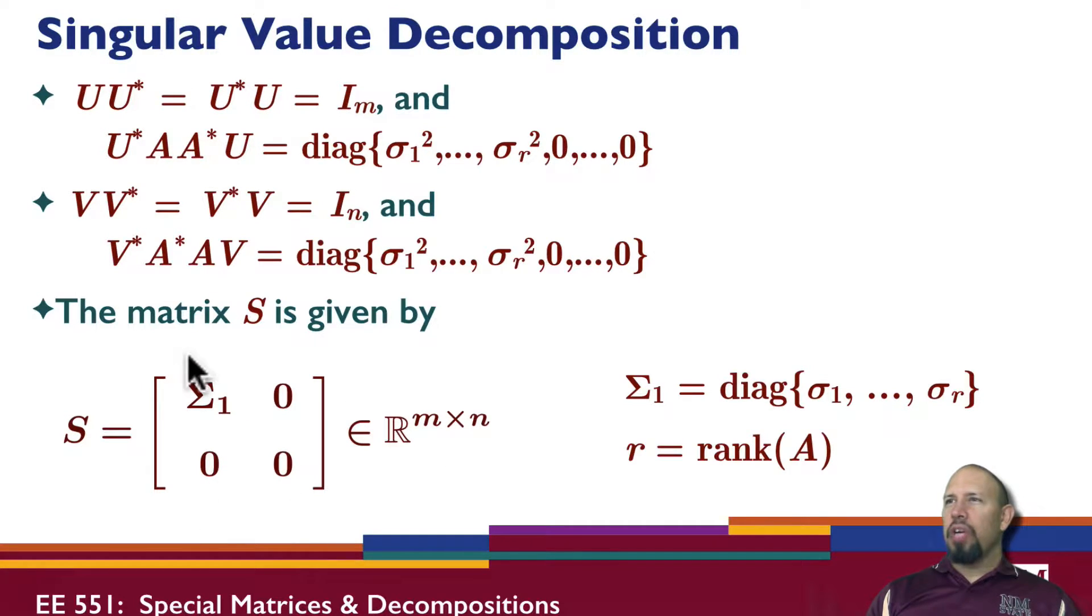So in general, we will have this form. Sigma 1 is a diagonal matrix with the singular values along the diagonal, where r, little r, is the rank of the matrix. So we know that just because we have some matrix does not mean it has full rank. Full rank means that either the rank is equal to N or the rank is equal to M. So that's a full rank matrix.